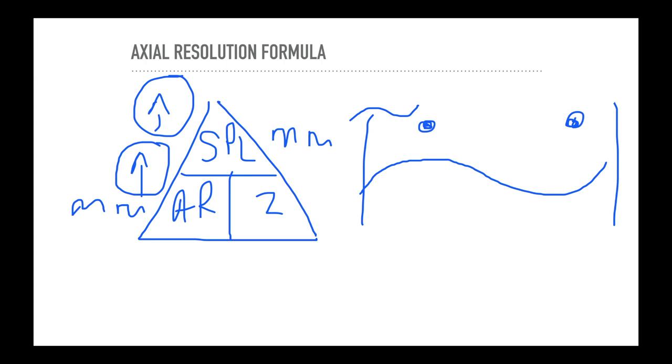So even though our number increases, our actual resolution is worse. That's why we see an increase in spatial pulse length gives us worse axial resolution. But this formula is confusing because we get those millimeters on both sides and we see them both increase. And it looks like the spatial pulse length increases and the axial resolution increases. It doesn't. The actual number value increases, and that gives us worse axial resolution.